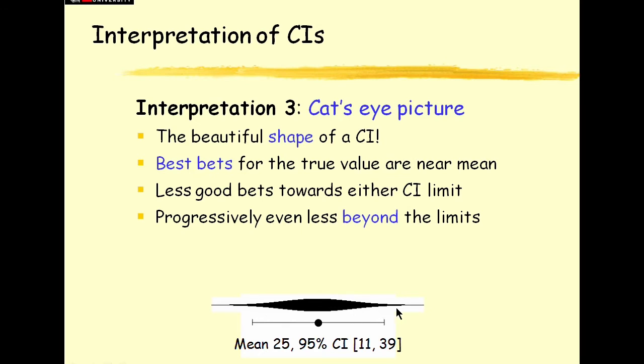So most likely it's in the sort of central region in the confidence interval and that likelihood tails off towards each end and there's still a little bit of black beyond the limits, the lower limit and the upper limit of the confidence interval, so there's still a chance that the true value might lie out there.